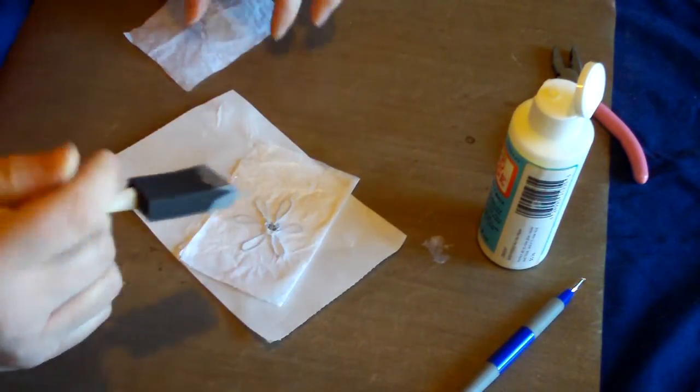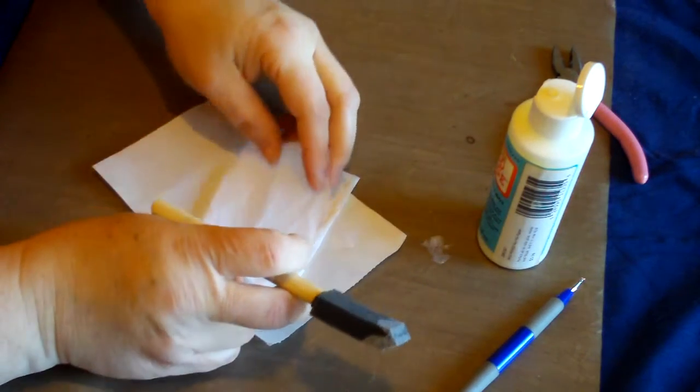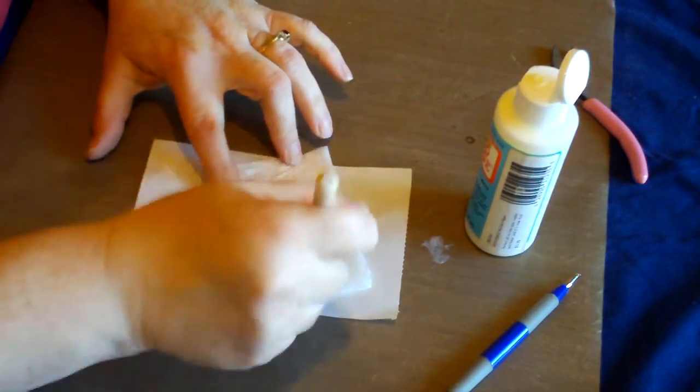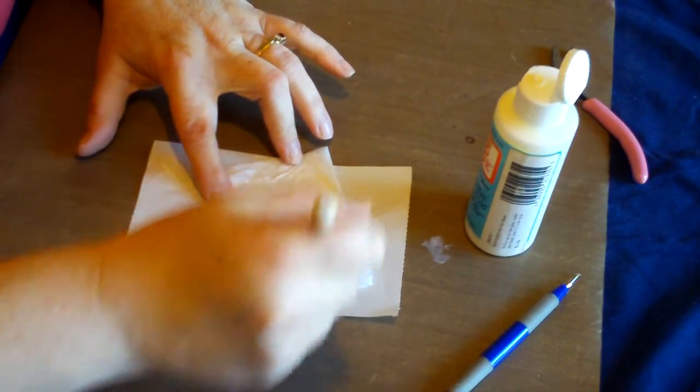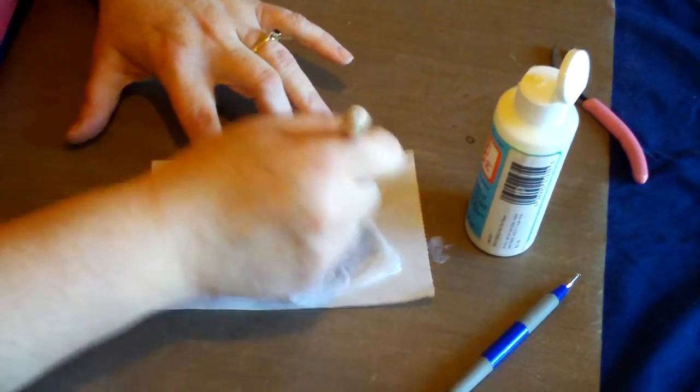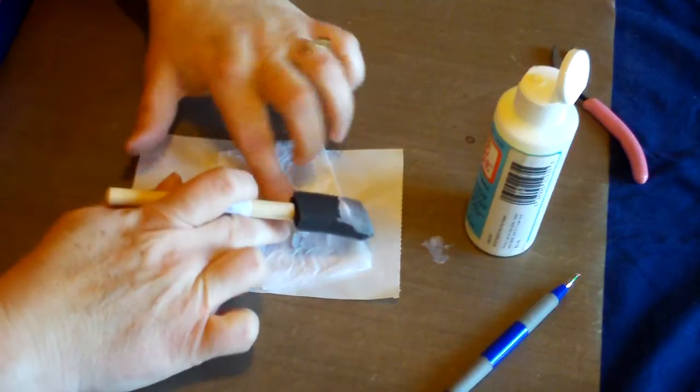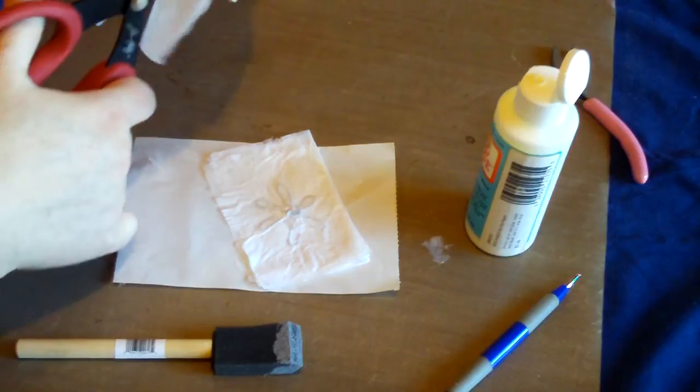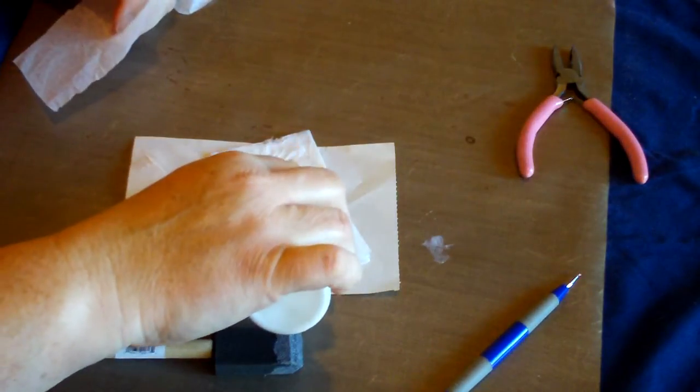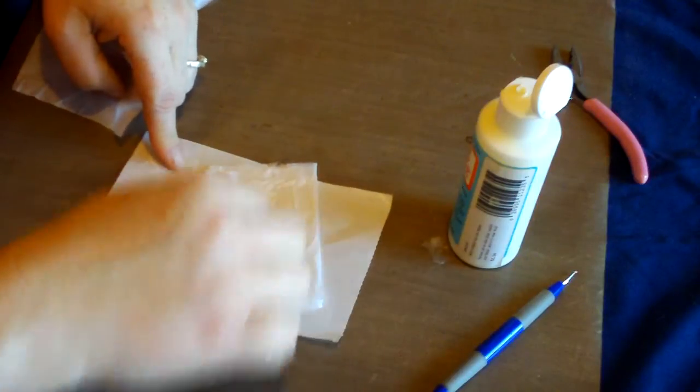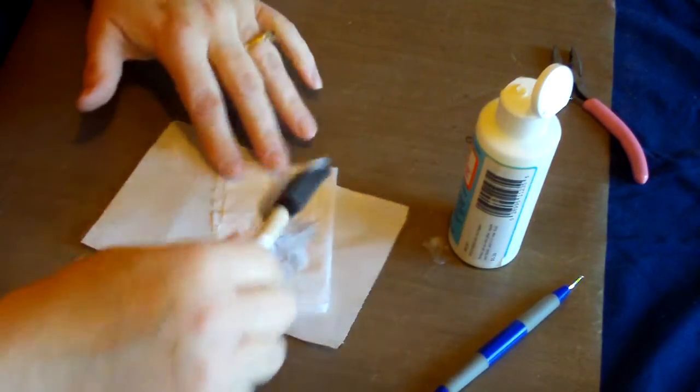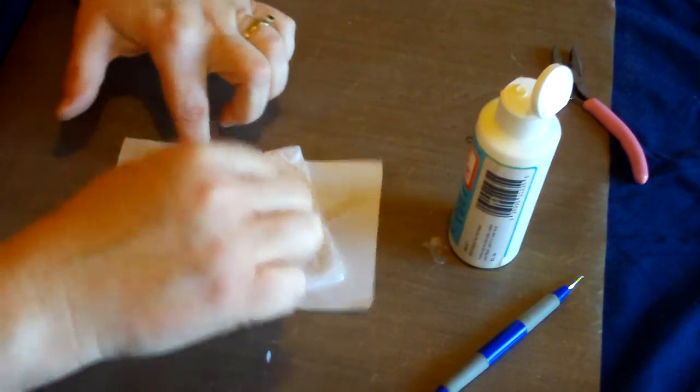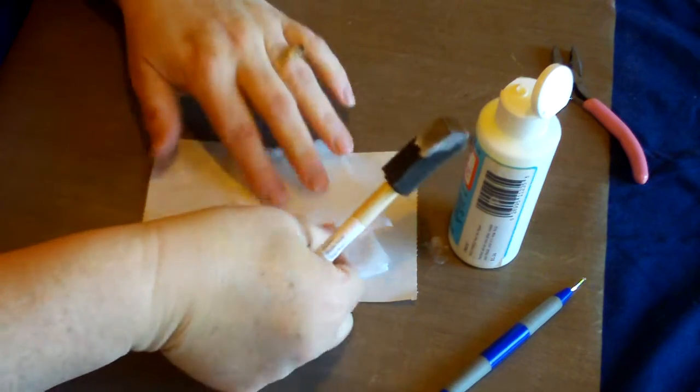Don't worry if it rips a little because you'll put on a couple of layers. You put on another layer, another bit of Mod Podge. You just keep doing this until you have maybe three or four layers on the very top of the wire. So here we go, there's a third layer. And then now a fourth layer.